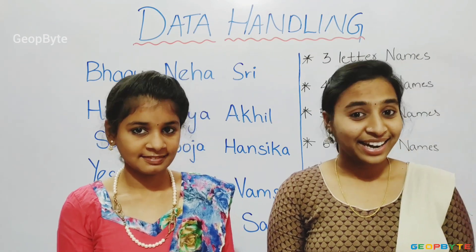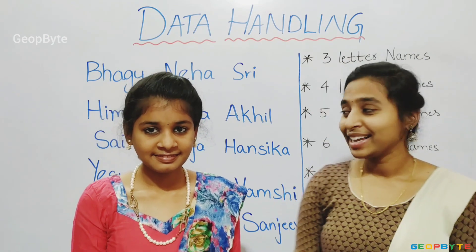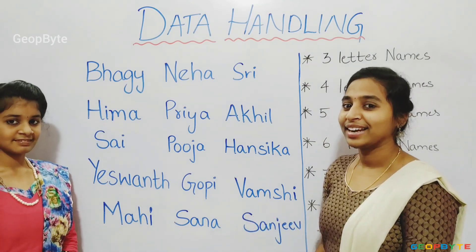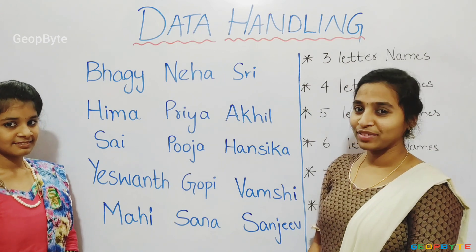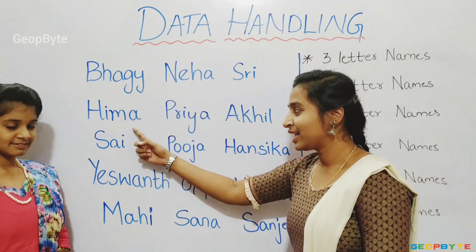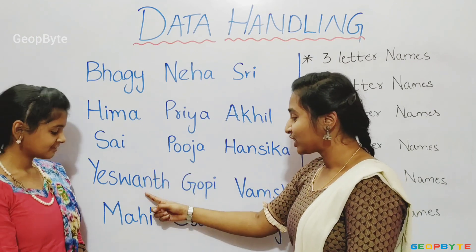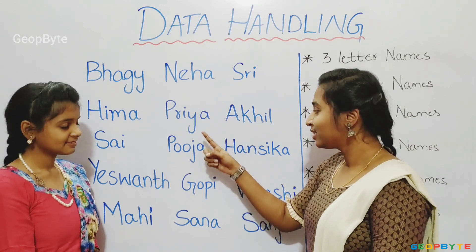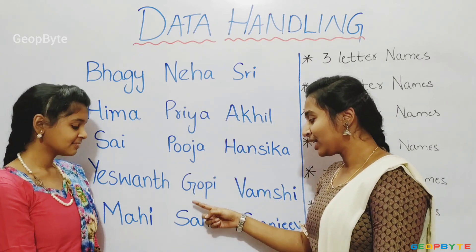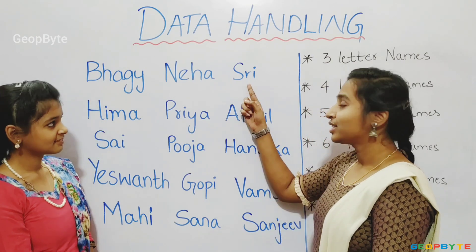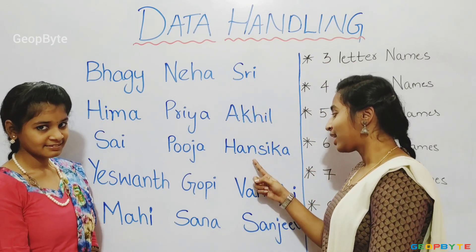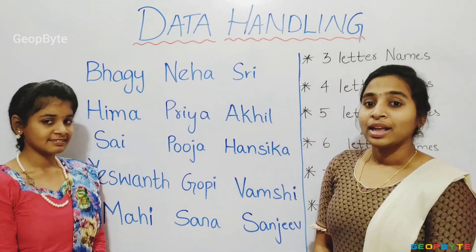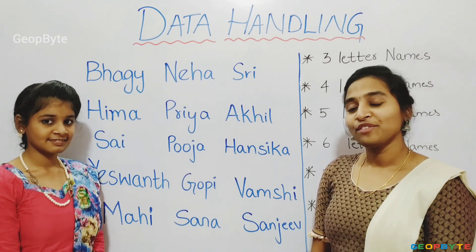Hey kids, let us go with one more example. See here, there are few names of some friends. Let us see them one by one. Now let us count the letters in the names one by one.